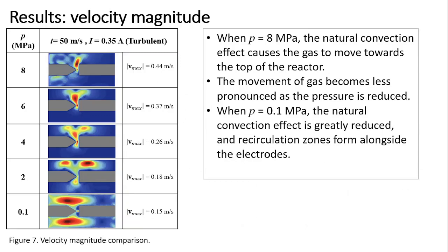This slide discusses the velocity magnitude. The natural convection effect at higher pressure causes the gas to move towards the top of the reactor. The natural convection effect is reduced at atmospheric pressure, and recirculation zones form alongside the reactor.